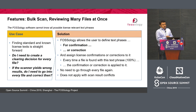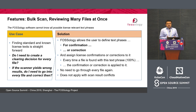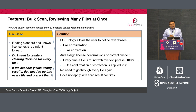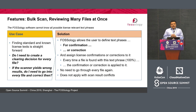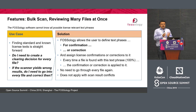There is one more scanner in FOSSology called bulk scan. We have so many open source licenses available, and it's not always possible that a scanner hits the right license at the right time — there may be a new license you've found. FOSSology gives you the bulk option where you can get the relevant text from the source file and mark it as a bulk scanning agent, choose a relevant license from the list, and scan it for the whole package. In bulk you can also add or remove licenses.